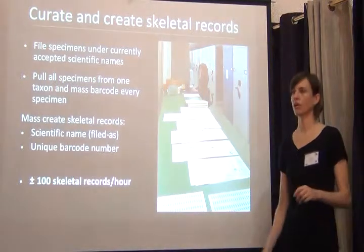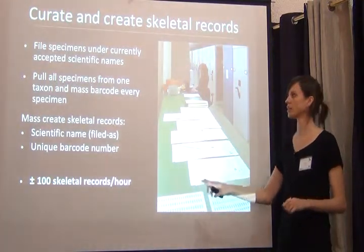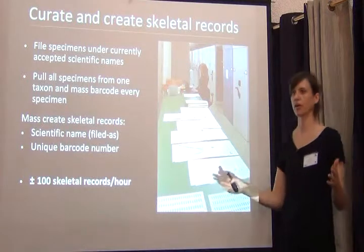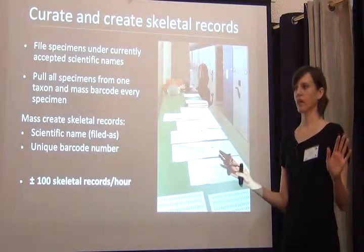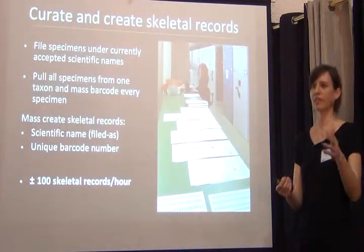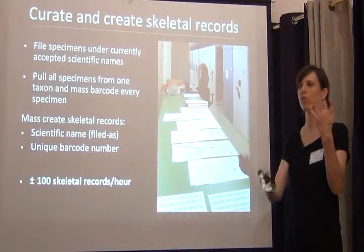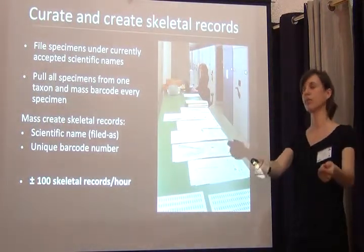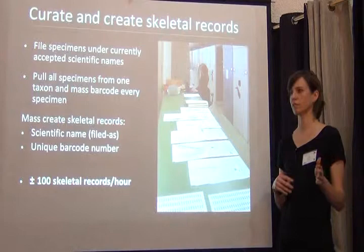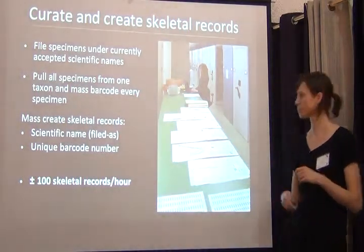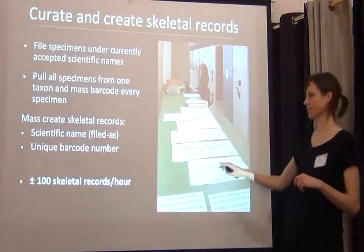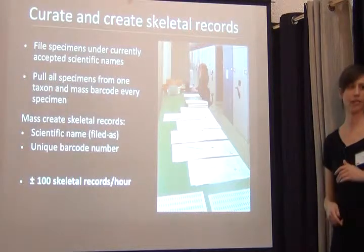Let me quickly go through the rapid data entry workflow introduced yesterday. We curate and capture skeletal records — mass barcoding records — and this is where we stopped doing anything by region. We're not going to pull things looking for everything from a particular state. We go into regions in the herbarium, pull everything out, barcode everything and image everything, because that cut out all the time it took to pull specimens. The only pieces of information we add are a barcode number and the file that has the scientific name — about 100 skeletal records an hour.